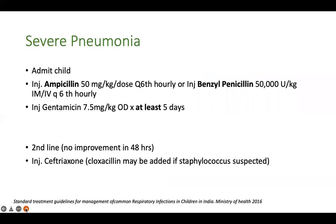For severe pneumonia - chest indrawing or fast breathing with danger signs - the child needs hospital admission and parenteral antibiotics: ampicillin 50 mg/kg/dose six-hourly or benzylpenicillin 50,000 units/kg IM or IV six-hourly, plus gentamicin 7.5 mg/kg once daily, for a minimum of five days (Ministry of Health guidelines recommend seven to ten days). If no response in 48 hours, switch to second-line: injection ceftriaxone or cefotaxime. If staphylococcal infection is suspected - especially with pyodermas - add cloxacillin, and treat for four to six weeks if there is empyema.